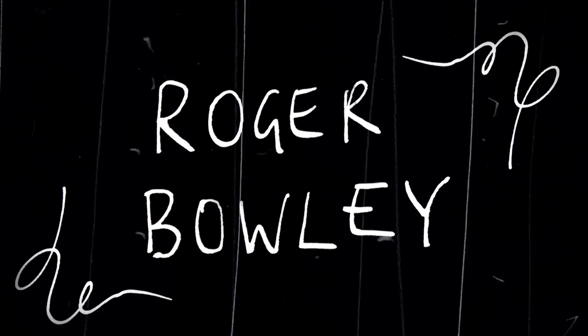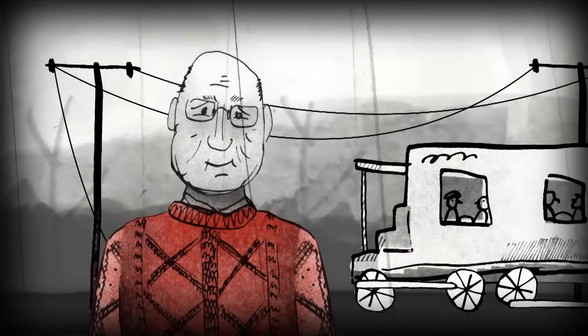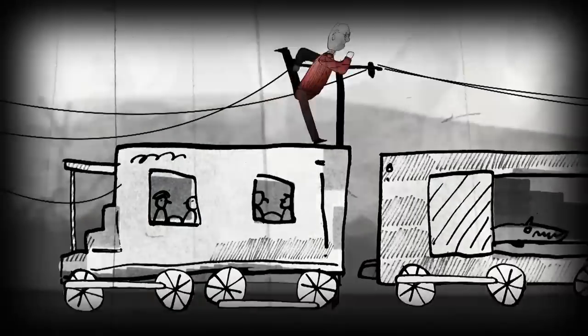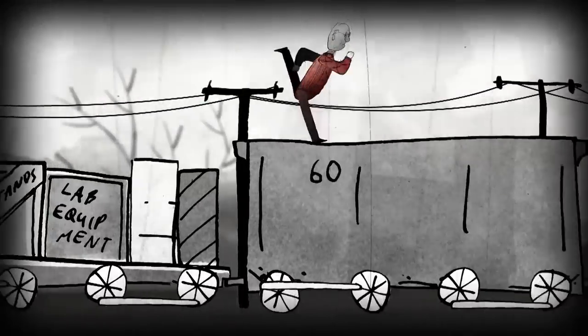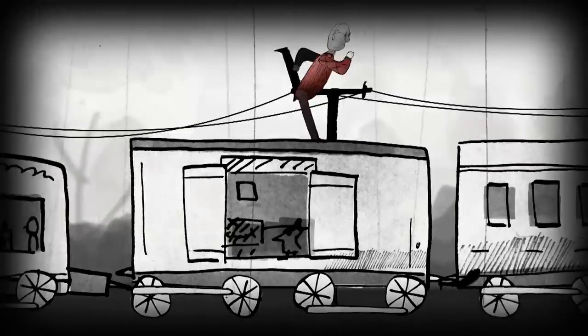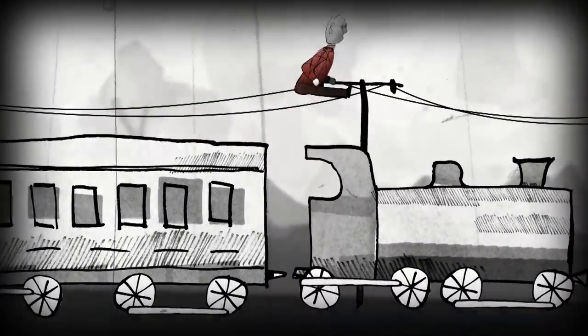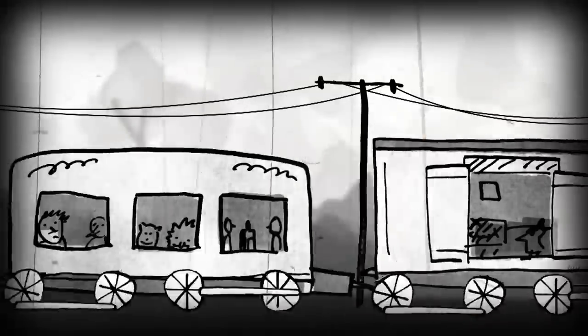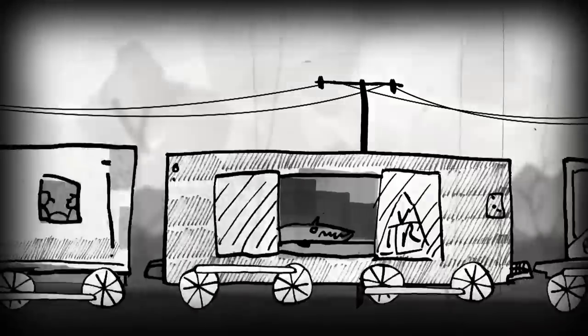If you ever see the movie The General with Buster Keaton, it's meant to be in the Civil War period, the 19th century, and they had telegraph wires alongside the railroads. The way you could send information was through these telegraph wires to let people know what the army was up to.